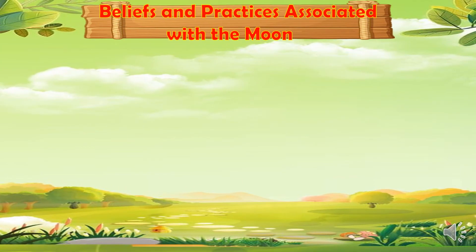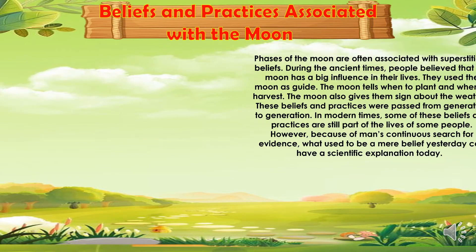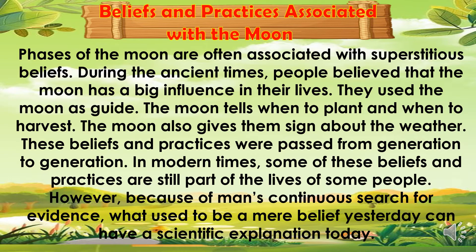We also have beliefs and practices associated with the moon. Phases of the moon are often associated with superstitious beliefs. During ancient times, people believed that the moon has a big influence in their lives and used the moon as a guide. The moon told them when to plant and when to harvest, and also gave them signs about the weather. These beliefs and practices were passed from generation to generation. In modern times, some of these beliefs are still part of people's lives. However, because of man's continuous search for evidence, what used to be a mere belief can now have a scientific explanation.